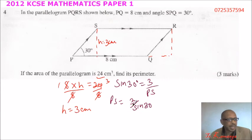You take your calculator, scientific one that you normally use, you type 3 divided by sine 30, and that should give you 6. This is 6 cm, so this side here is 6 cm.